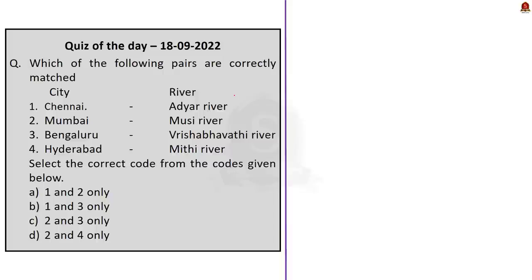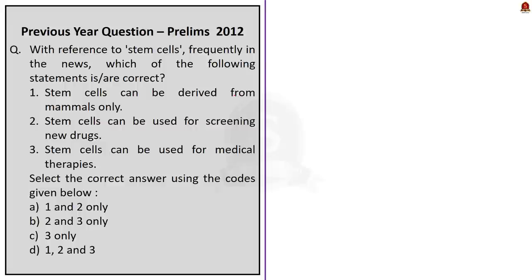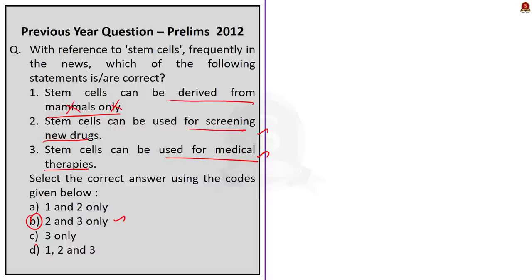Now let us move to the preliminary practice questions. With reference to stem cells frequently in the news, which of the following statements is or are correct? Statement 1: Stem cells can be derived from mammals only. Statement 2: Stem cells can be used for screening new drugs. Statement 3: Stem cells can be used for medicinal therapies. The correct answer is Option B — 2 and 3 only. Statement 1 is wrong because stem cells can be derived from any living organism, not restricted only to mammals. Statements 2 and 3 are correct.